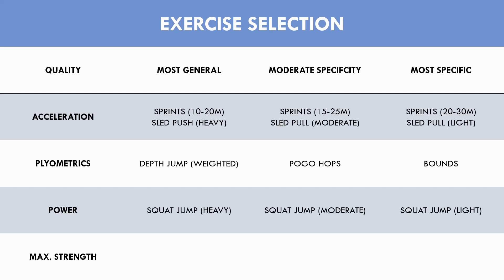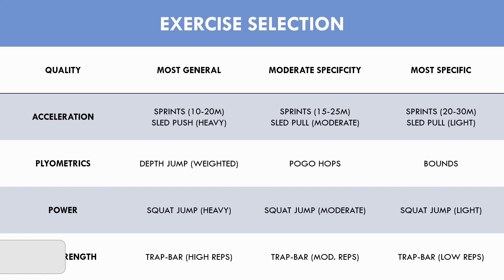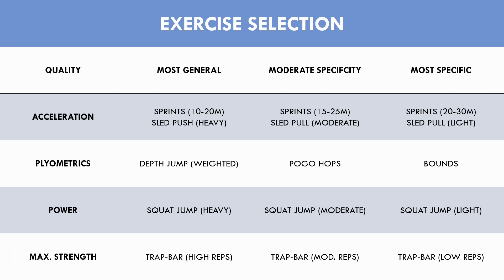For power training we have implemented the squat jump for all three categories although the load varies. Heavier loads are preferential in more general mesocycles since they require higher forces but involve slower movement velocities, while lighter loads can be used as a more specific method involving faster movement speeds. For maximum strength training we have implemented the trap bar for each category, where higher reps with lighter loads benefit structural adaptations and heavier loads with lower reps maximize force output.